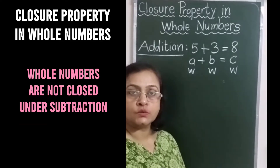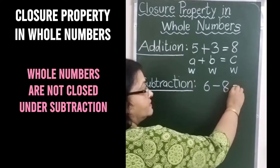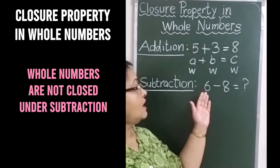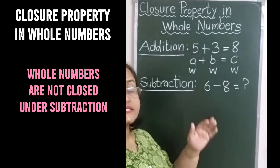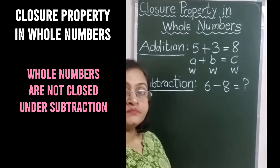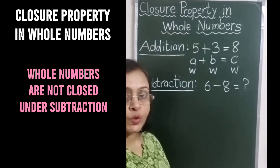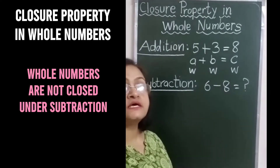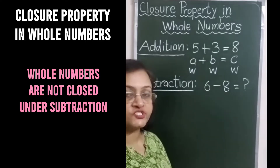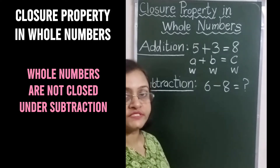Is it true in subtraction also? Let's see. If we subtract 8 from 6, will we get a whole number? No — we cannot subtract 8 from 6. 8 में से 6 subtract नहीं हो सकता. अगर हम 6 में से 8 subtract करने की कोशिश करेंगे, तो हमें result में whole number नहीं मिलेगा. So the whole numbers are not closed under subtraction — closure property is not true for subtraction in whole numbers.